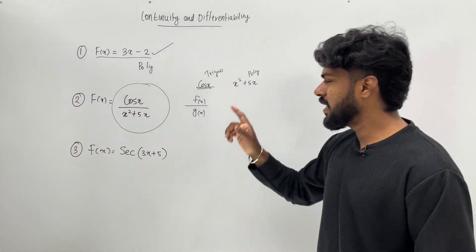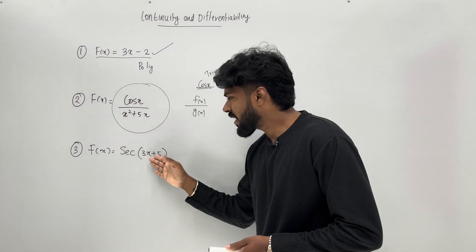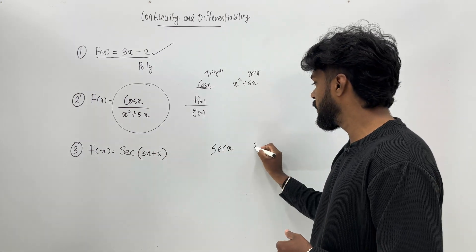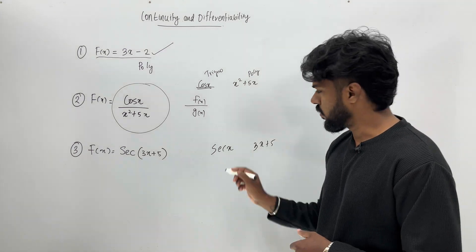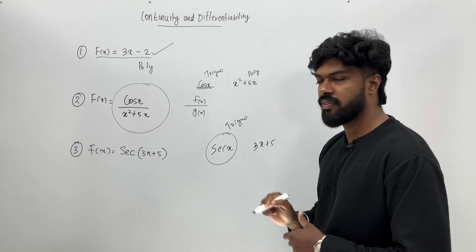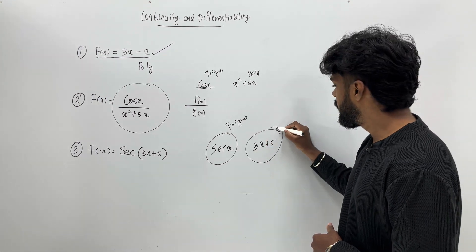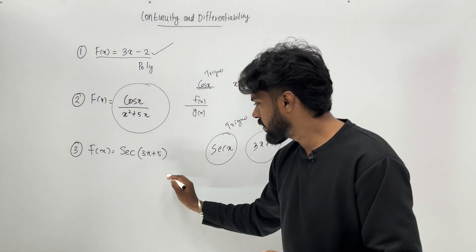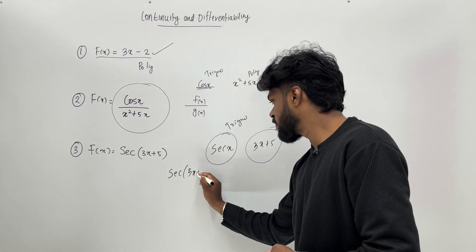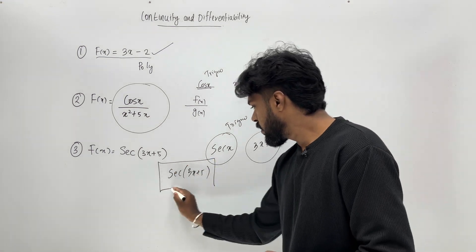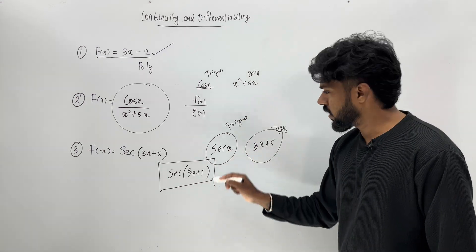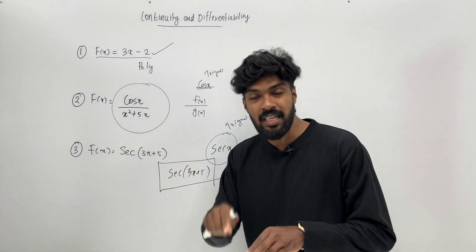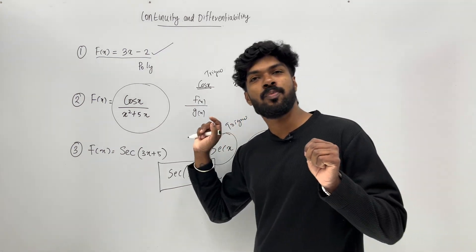x squared plus 5x is continuous as it is a polynomial function. Therefore f divided by g is continuous. If you are aware of this: cos x is a trigonometric function, and 3x plus 5 is a polynomial function. Therefore their composition, cos(3x plus 5), is also a continuous function.